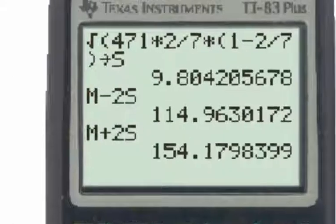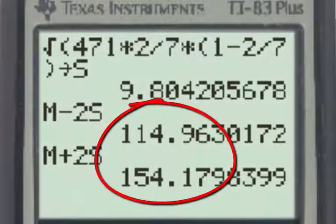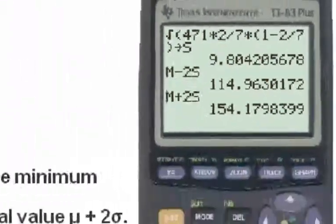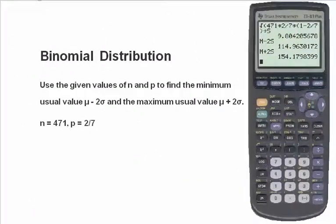And here are the two values for the minimum usual value and the maximum usual value in this binomial distribution. Pretty cool.